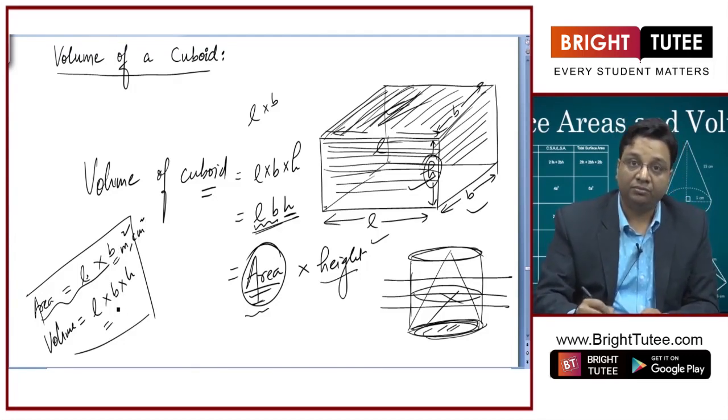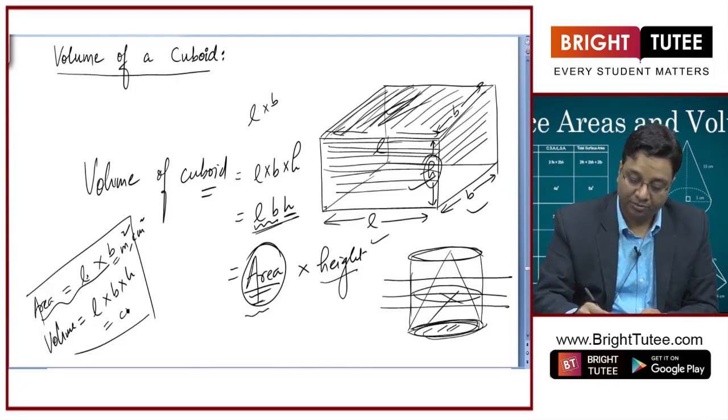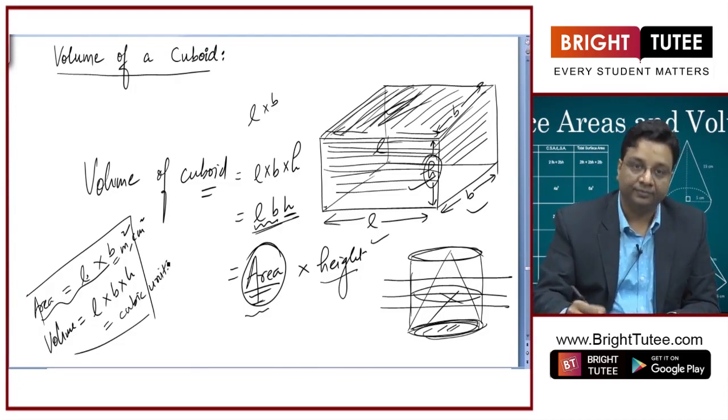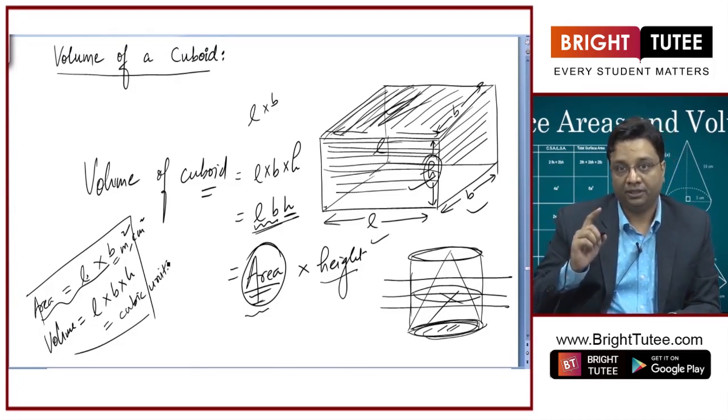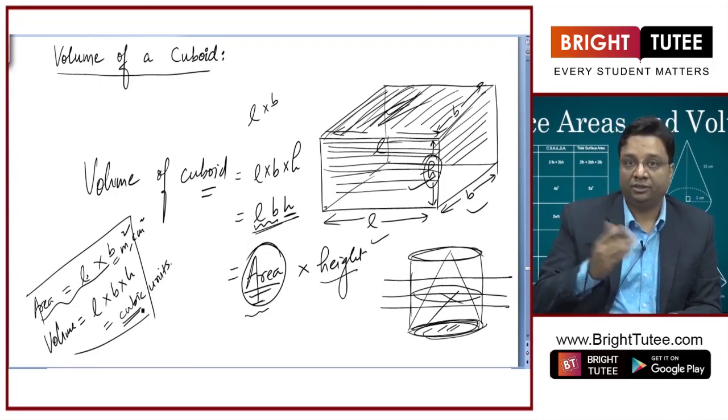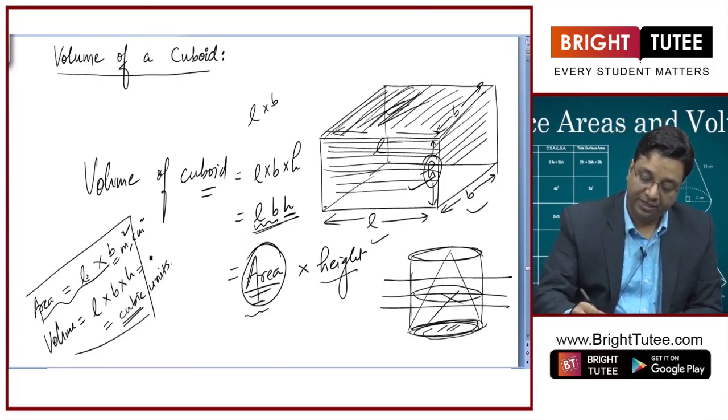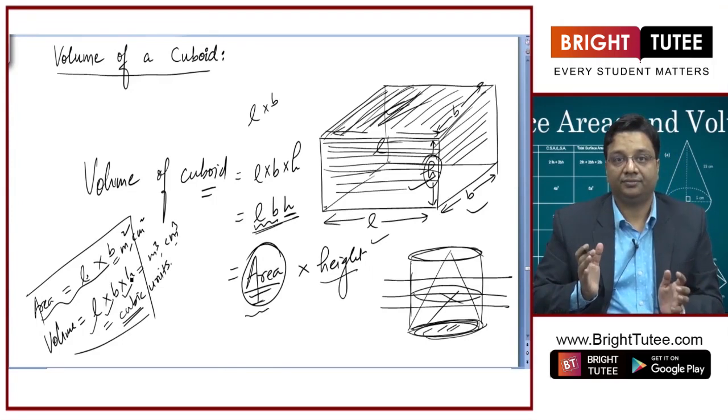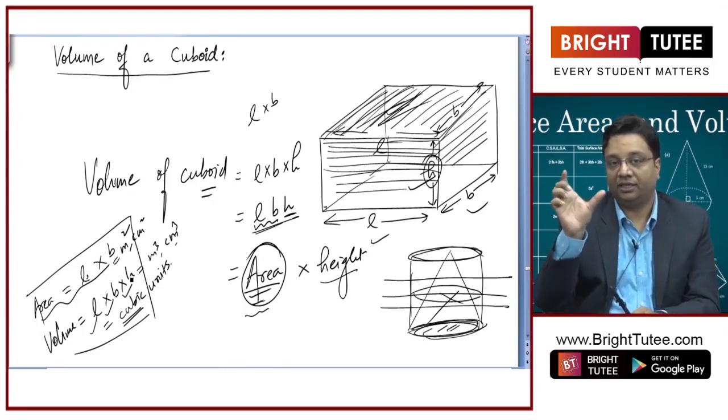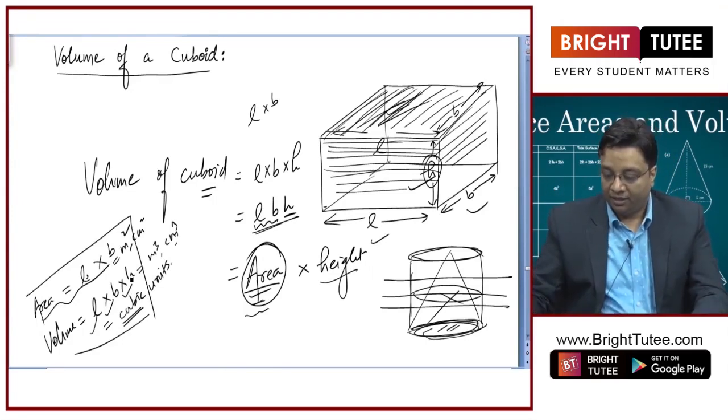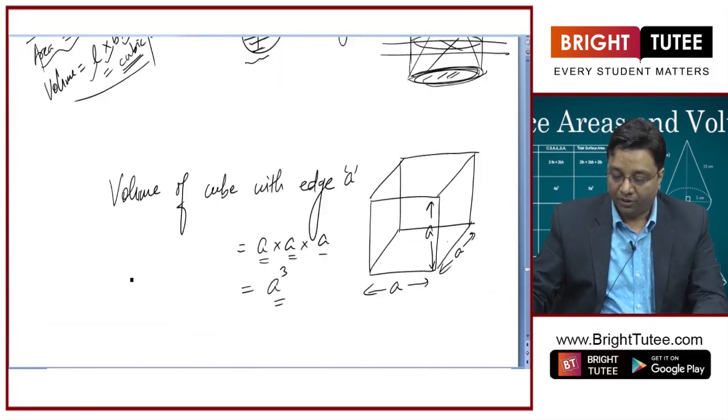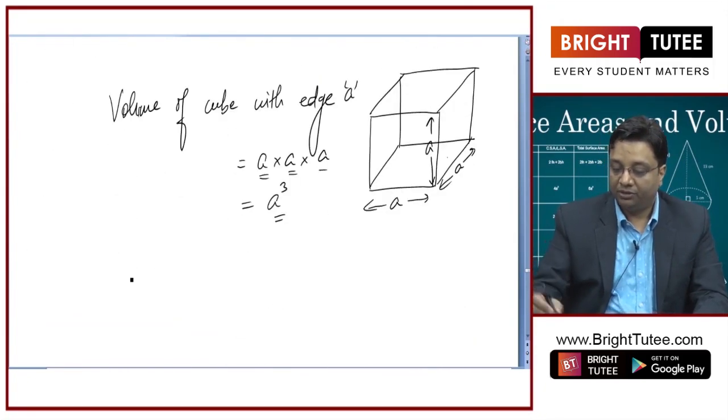Similarly, volume will have unit cubic units. So, it may be meter cube, centimeter cube, etcetera. Because it is a product of three lengths. Breadth is also a certain kind of length. So, this was about volume of cuboid and volume of cube with edge A.